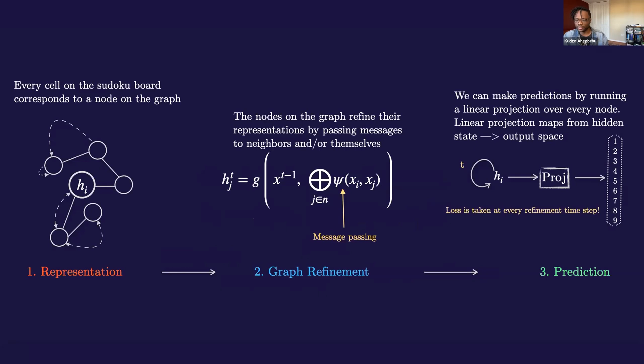Cool. Okay, so how do we do this for Sudoku? Well, every cell on the Sudoku board corresponds to a node on the graph. This node on the graph, the nodes on this graph refine their representations by passing messages to themselves or their neighbors using that graph refinement equation we just saw. Now what's typically done is that you run this graph refinement phase for a fixed number of time steps, say 10 time steps, and then at the very end you run your linear projection and you make a prediction. What we do a little differently here is that we make a prediction at every point along the graph refinement phase and we evaluate the loss at every single point as well. This allows the model to be more robust to being evaluated during the graph refinement, to being evaluated with more graph refinement iterations at test time than it was trained on at training.